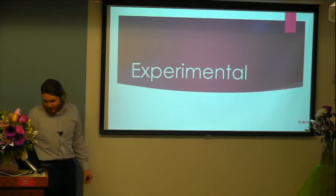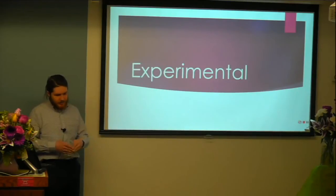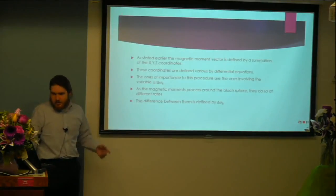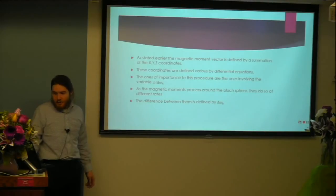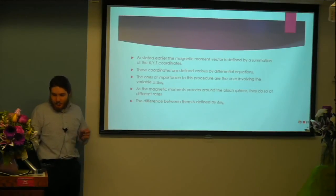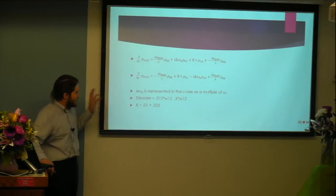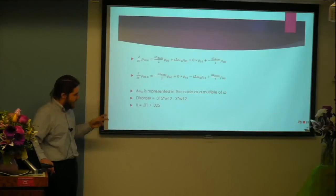Now, what did I do exactly? As the electrons move, they move at different rates. Specifically, the disorder is the variance between each individual magnetic moment as it moves. They were defined by the summation of the x, y, and z coordinates, which are defined by various differential equations. The important variable in this is the plus or minus i·delta-omega-k. They move at different rates, and the difference between those is defined by the delta-omega-k. Here are the two formulas used earlier to define the magnetic vector, and here we have the delta-omega-k components, which are all the important factors.